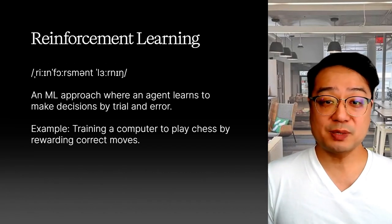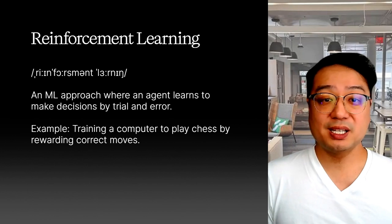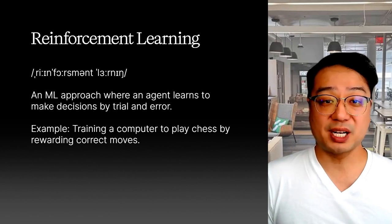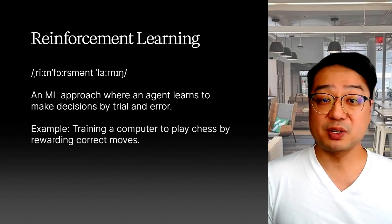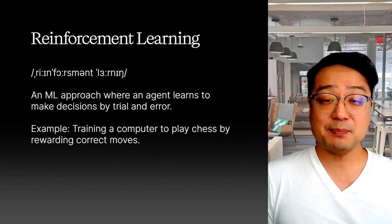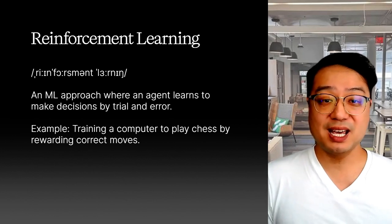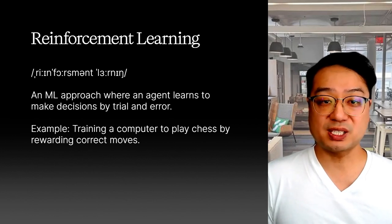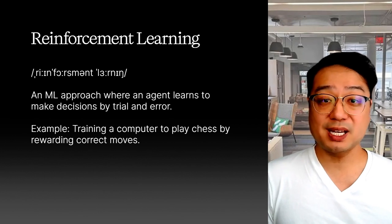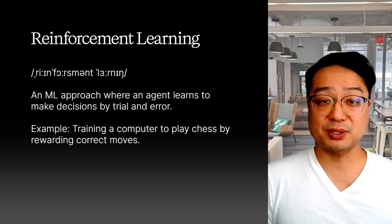And finally, reinforcement learning. This is where the AI learns by trial and error, receiving rewards for good actions and penalties for bad ones. Think of it like training a dog with treats — you reward the dog when it does something right, and it learns to repeat that behavior.